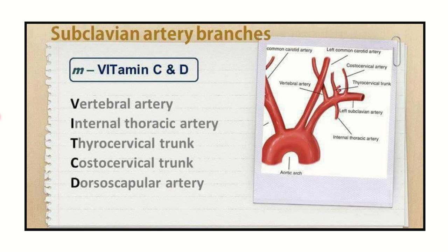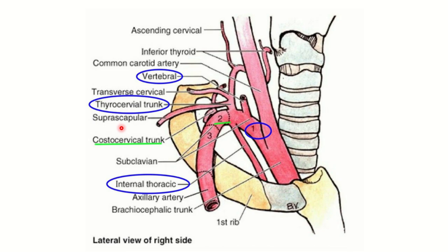These are the branches of the subclavian artery. The subclavian artery is divided into three parts, and this picture shows the different parts along with which branches arise from each part.